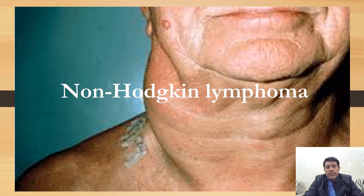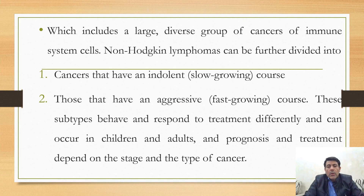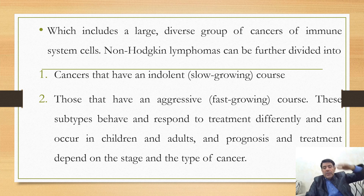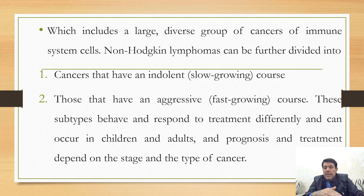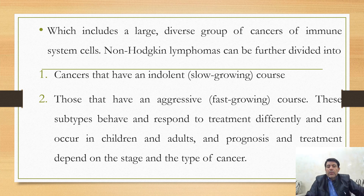Non-Hodgkin lymphoma includes a large, diverse group of cancers of immune system cells. It is divided into two types: indolent, meaning slow-growing over years, and aggressive, meaning fast-growing. These subtypes behave and respond to treatment differently, and can occur in children and adults. Prognosis and treatment depend on the subtype.